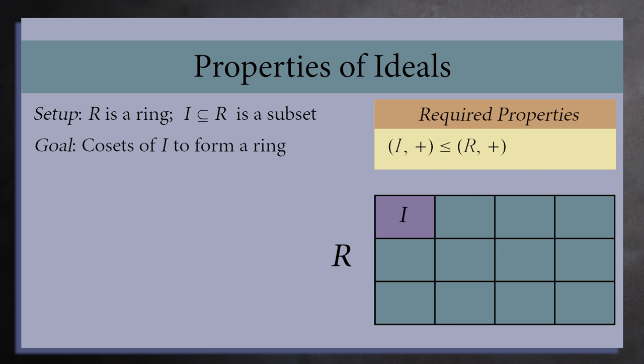Let's pick two cosets at random, x + I and y + I. Because I is a normal subgroup of R, if we add these two cosets together, we get the coset (x + y) + I.